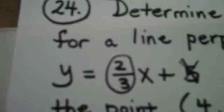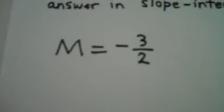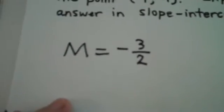So the way I got that, this line has slope 2/3. Our line is perpendicular to it. Therefore, our line has slope -3/2.